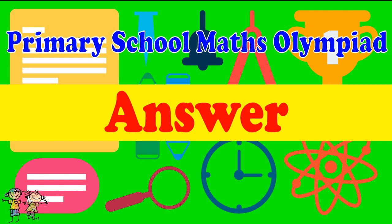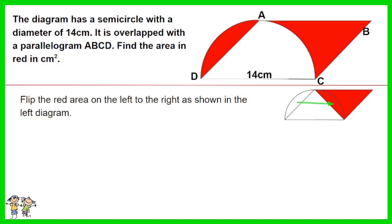Here is the recommended answer. Flip the red area on the left to the right as shown in the left diagram. The new area in red is half the size of the parallelogram ABCD.